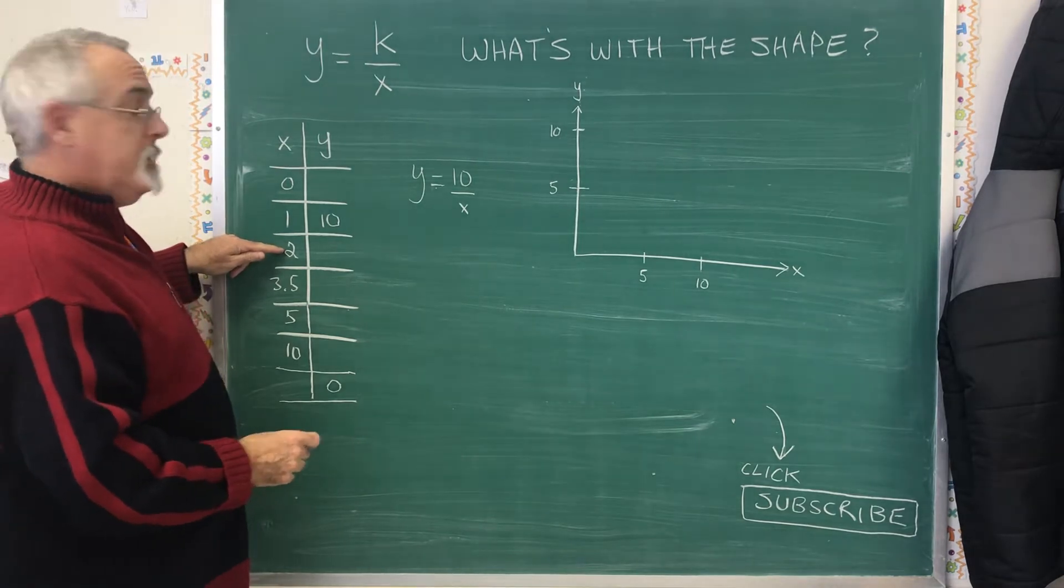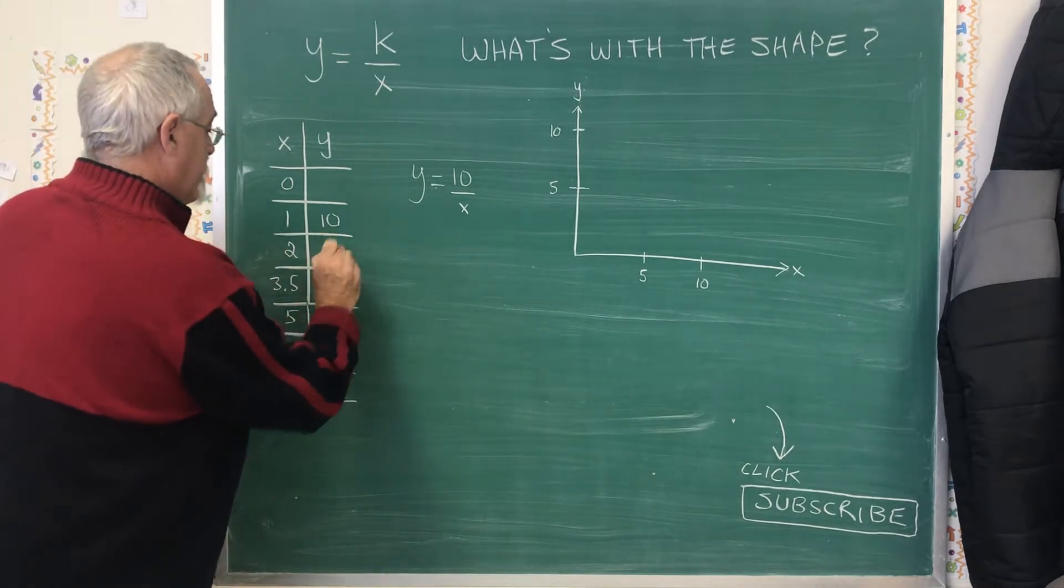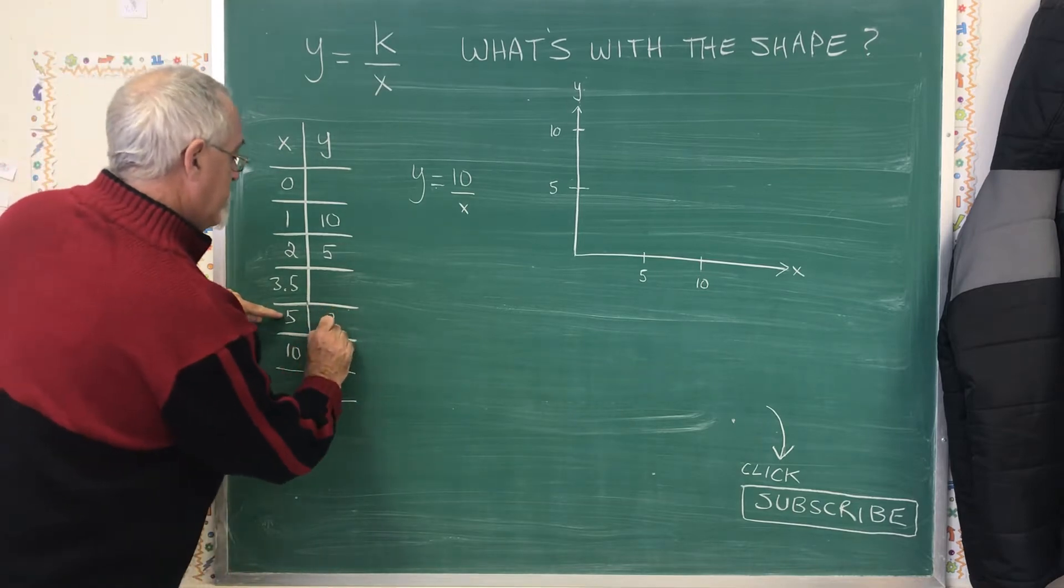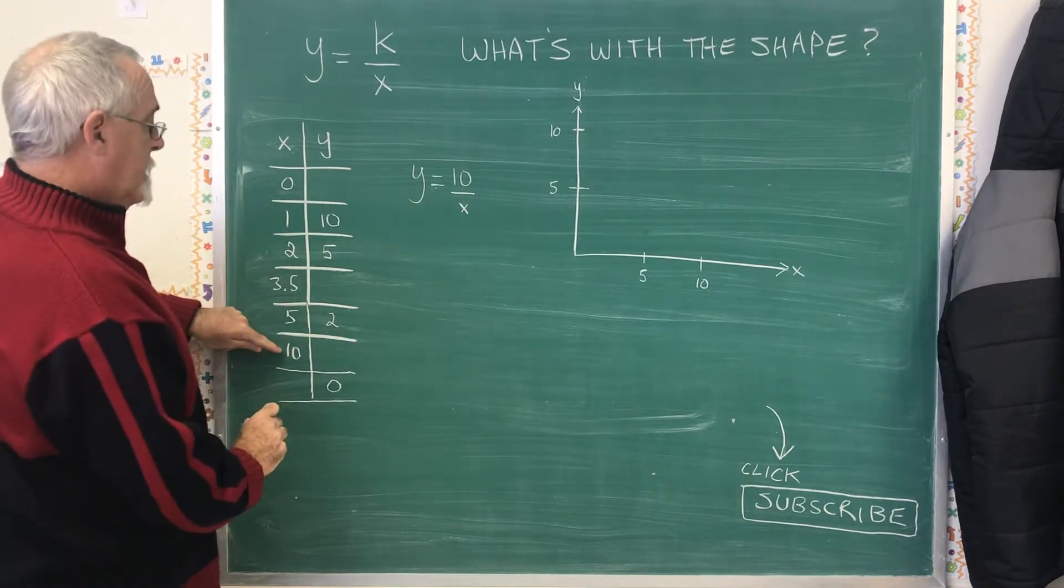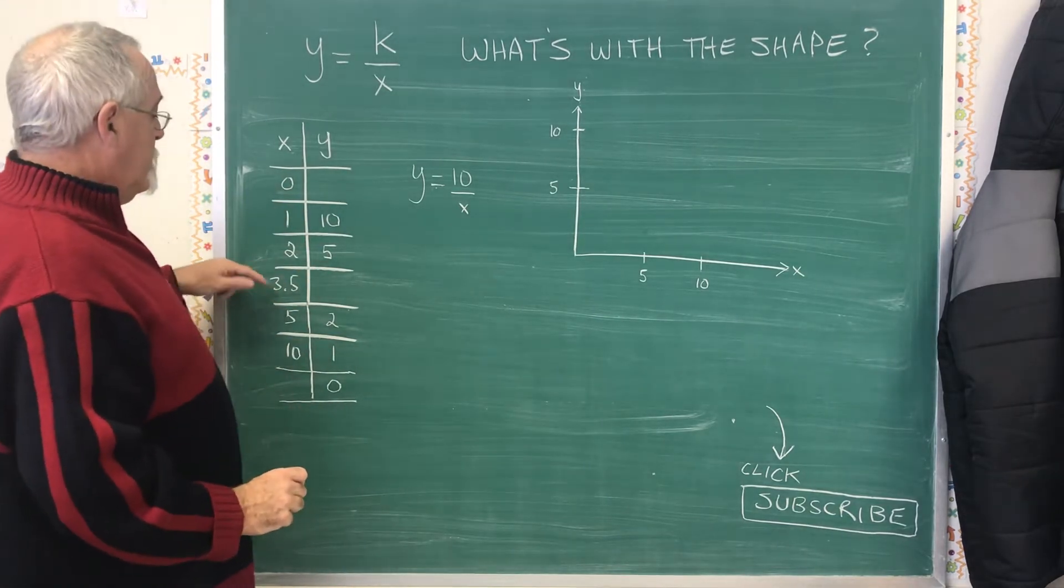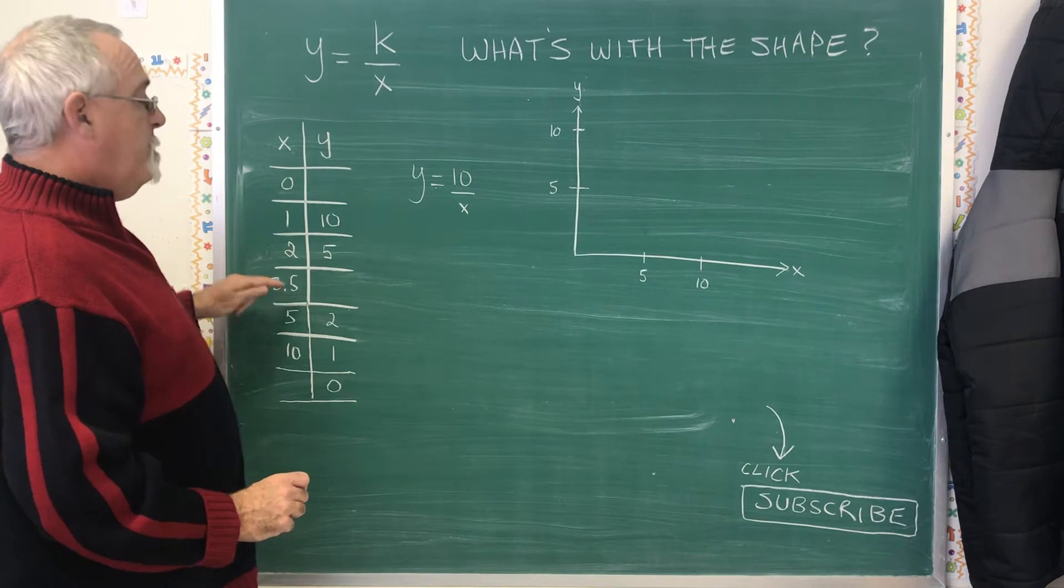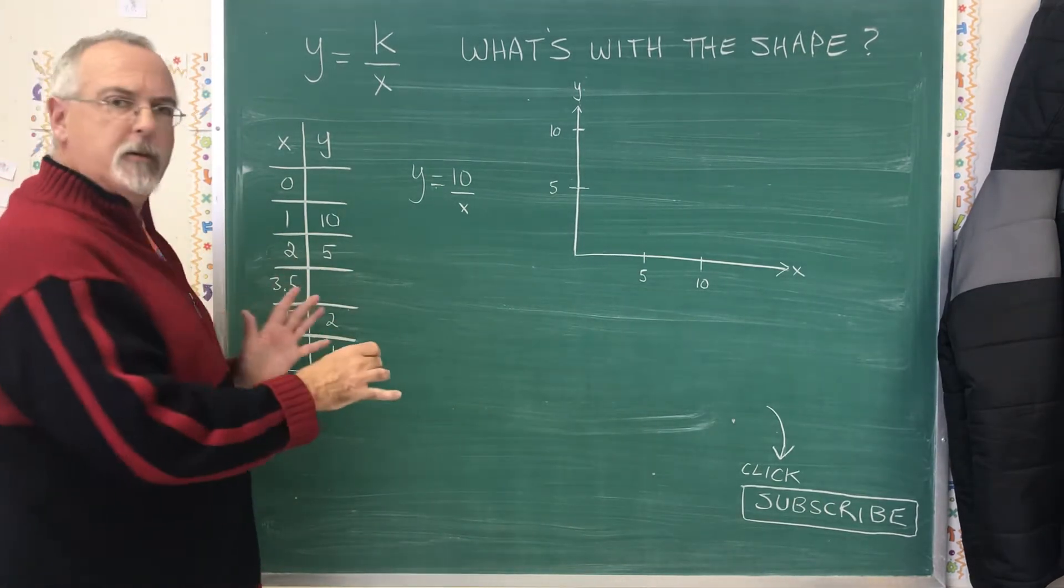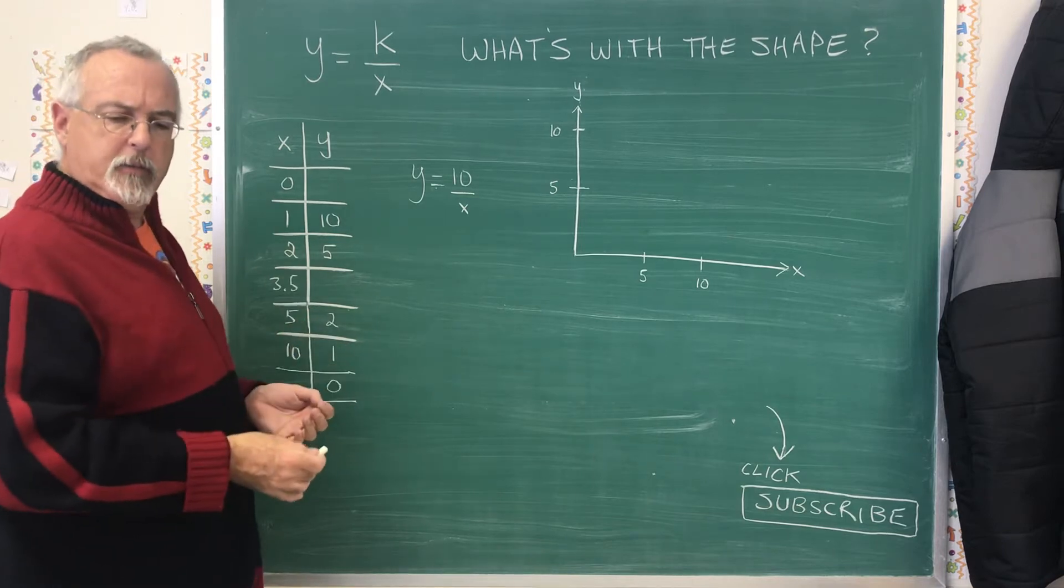y equals 10 divided by 2 is 5. y equals 10 divided by 5 is 2. y equals 10 divided by 10 is 1. Those points were fast to do. I chose this point, 3.5, because I want an extra point that shows the middle of this curve, so we can understand the curve a little better.